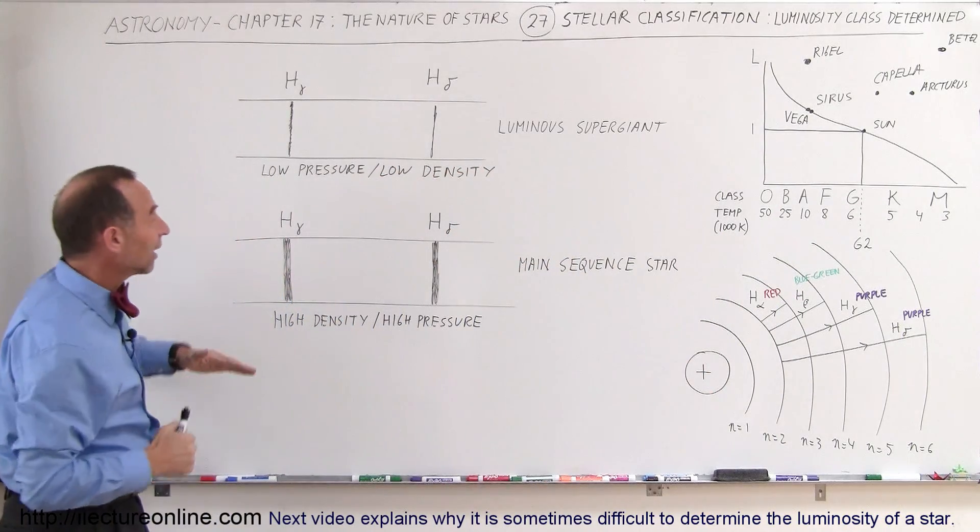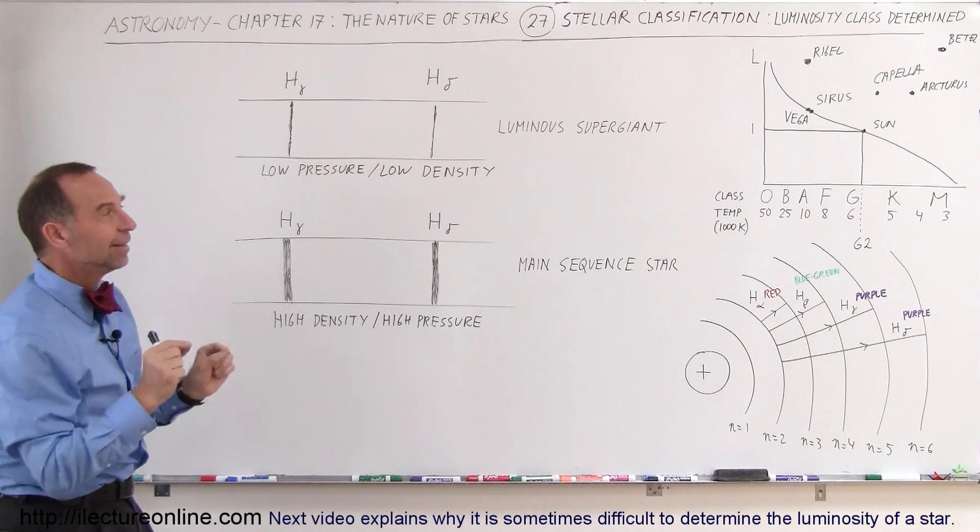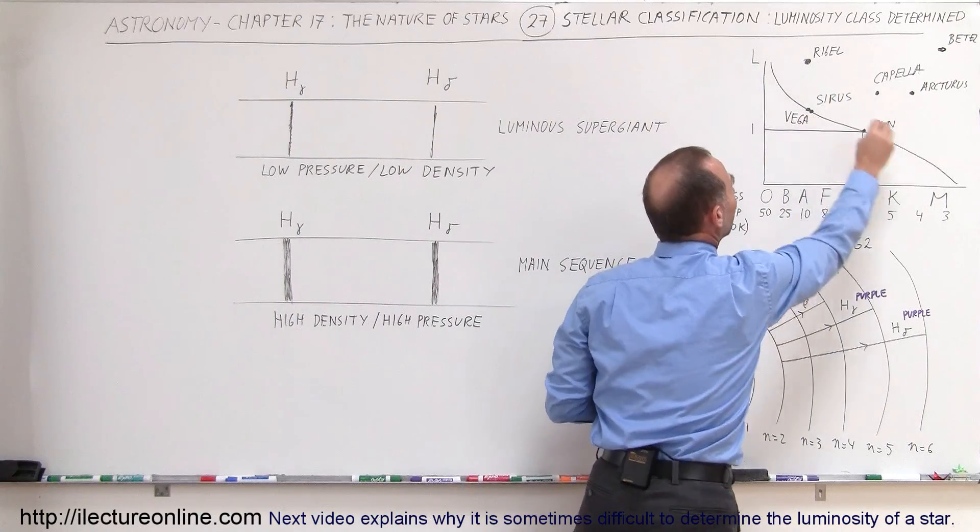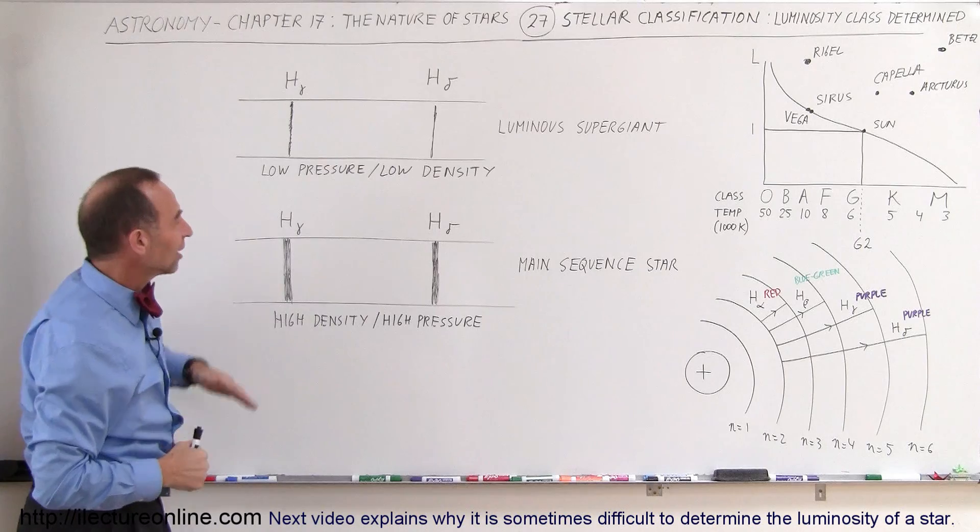But we're able to do that, and from that, we're able to determine what type of luminosity class we're looking at. And therefore, we're able to place the stars we're looking at exactly on the H-R diagram, as they should be, based upon the determination of the luminosity classes.